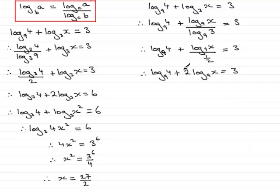Again, I can use the power rule for logs by taking the 2 up as a power of x, so that's x squared. So we can have that this is the log of 4 in base 9 plus the log of x squared in base 9, and that equals 3.